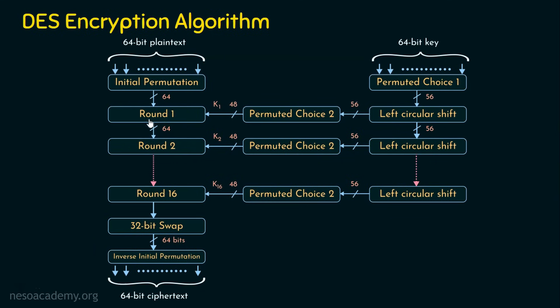What is happening inside each round will be covered in the next presentation. For now, just understand: 64-bit input is given to each round and the output of each round is 64 bits. We process 16 rounds this way. At the end of 16 rounds, is what we get the ciphertext? No — just correlate this with the Feistel structure. After completing the end rounds, what we get is the pre-output.